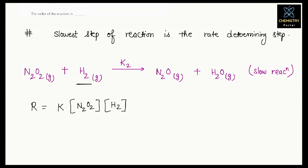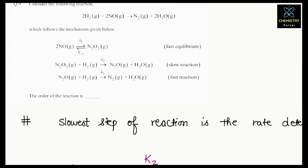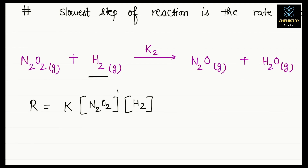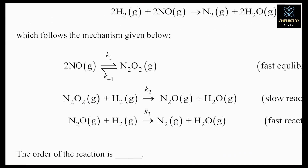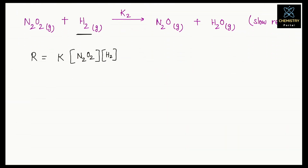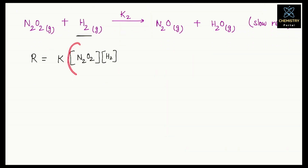But this is not so simple. If you write the answer as 1 + 1 = 2 for the order, this is wrong — this is not our final answer. Because N₂O₂ acts as an intermediate here. We know that in the rate law, an intermediate should not appear. So we have to eliminate this intermediate.